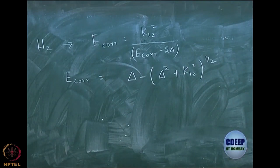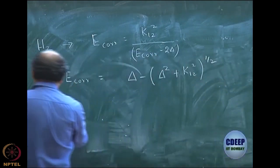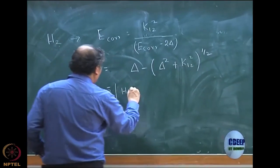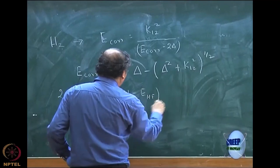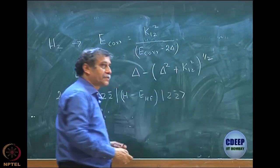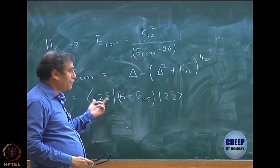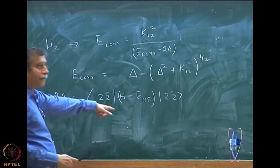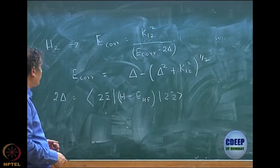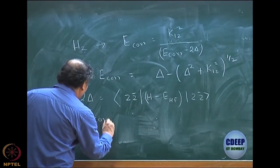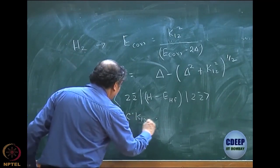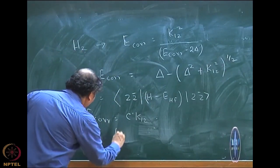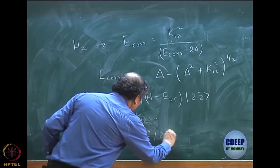But 2δ — remember, 2δ was the diagonal element of the |2 2̄⟩ matrix element, which is basically the doubly excited configuration on both sides; that was your 2δ. So δ is half of this. And if you remember, we first obtained E correlation as C times k₁₂, where C was the coefficient for the doubly excited determinant. So it was |1 1̄⟩ plus C|2 2̄⟩.